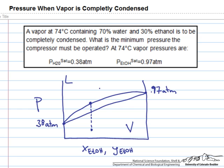And the only trick to this problem is to realize that this line is the bubble point line.